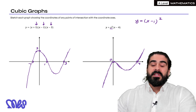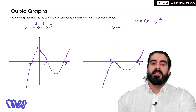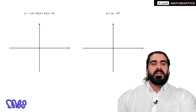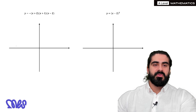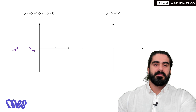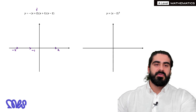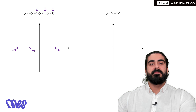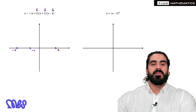You can see it crosses the y-axis at zero — if you make x equal zero the whole thing just becomes zero. Next one: ignoring the minus for a second, it crosses at minus two, minus one and two. Where does it cross the y-axis? It will be two times one times minus two, which gives you minus four. But remember there is a minus in the front, so instead of crossing at minus four it crosses at four.